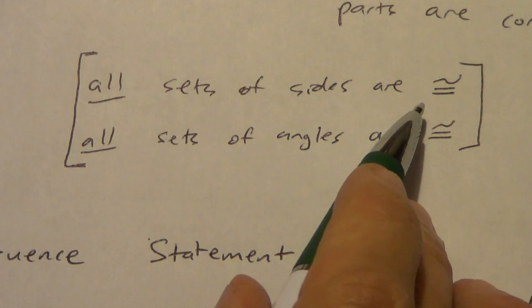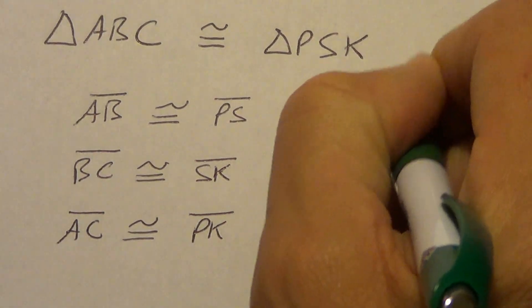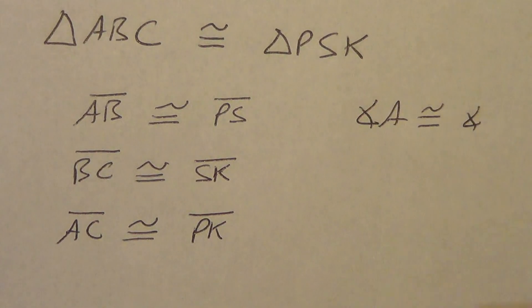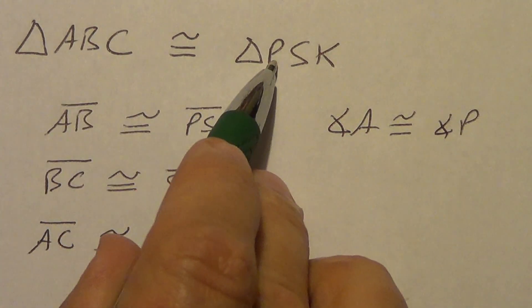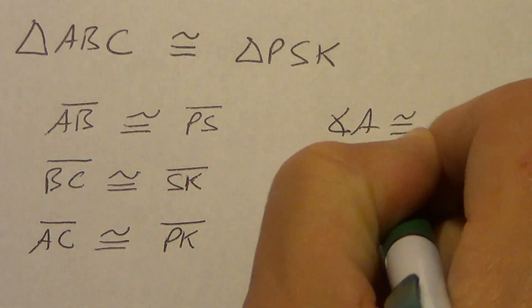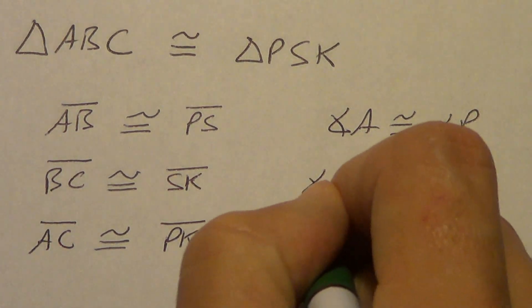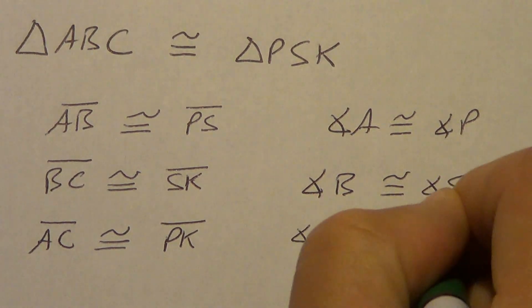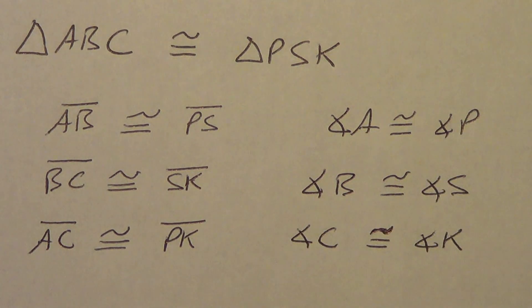All right, well, what about the angles? Remember, way back here, all sets of sides are congruent. We just did that. Triangle has three sets of sides. All sets of angles are congruent. So, we have to have three angles now. So, angle A is congruent to angle what? Well, obviously, P are in the same position. Remember, corresponding in the same position. Angle B would be congruent to angle S. And angle C would be congruent to angle K.